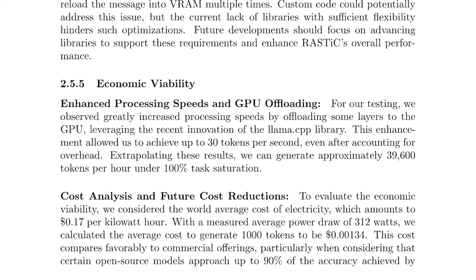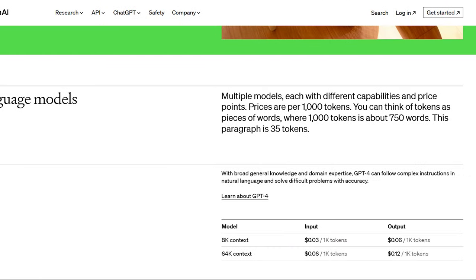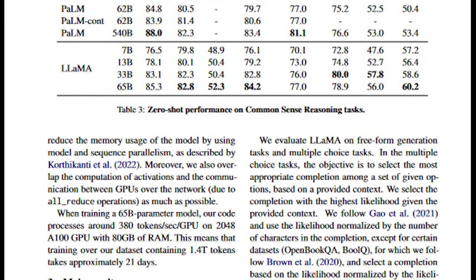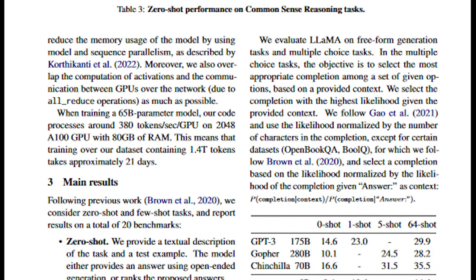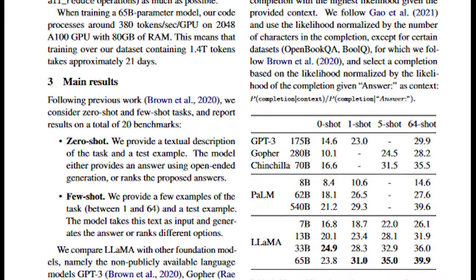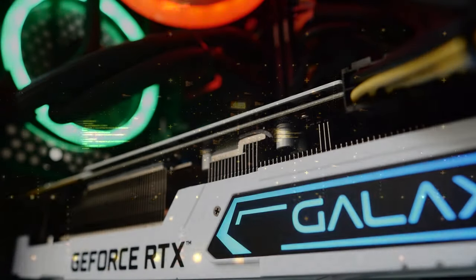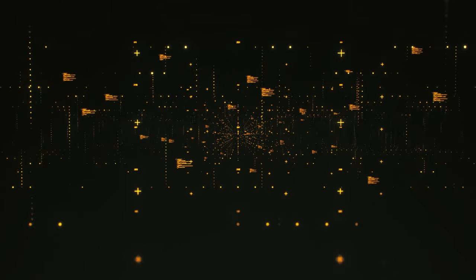Shifting to the economic lens, we evaluated the profitability for participation in the network using an electricity cost of 17 cents per kilowatt hour. We computed the cost of generating 1,000 tokens to be a mere $0.00134, considering the average measured power draw of 312 watts. This cost-benefit analysis gains further significance when weighed against commercial alternatives — notably, some open source models approach an impressive 90% accuracy level compared to OpenAI's GPT models. We anticipate a future reduction in costs as ongoing technological strides continuously elevate the efficiency of computations.